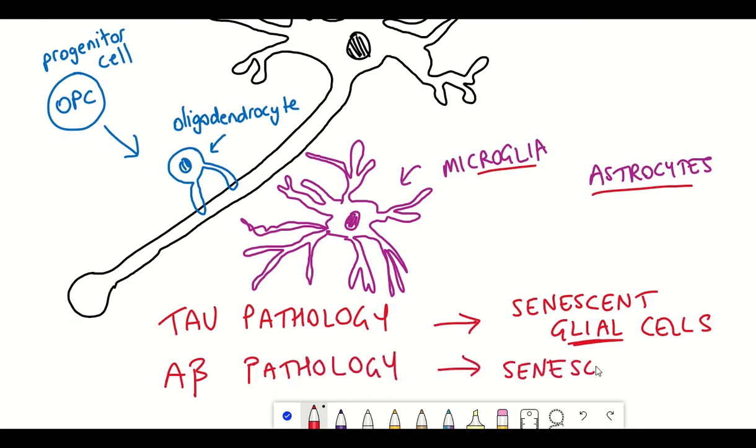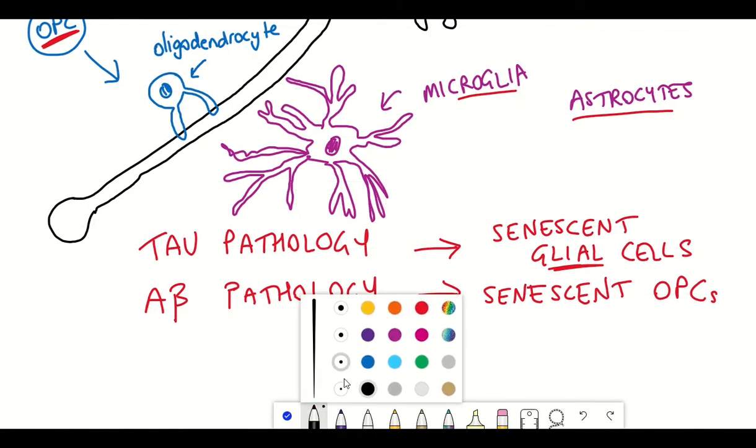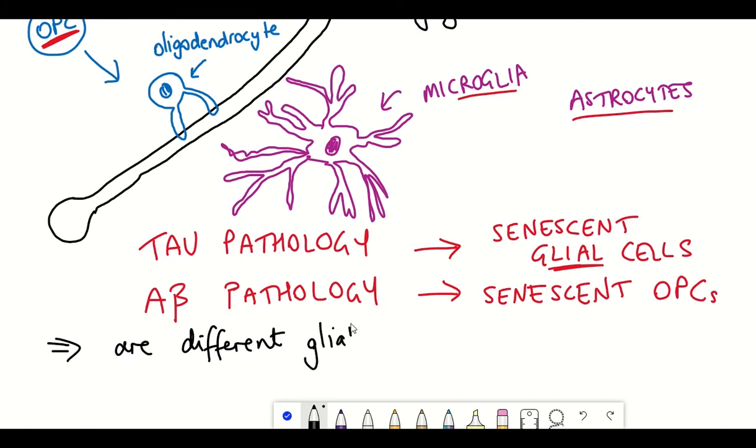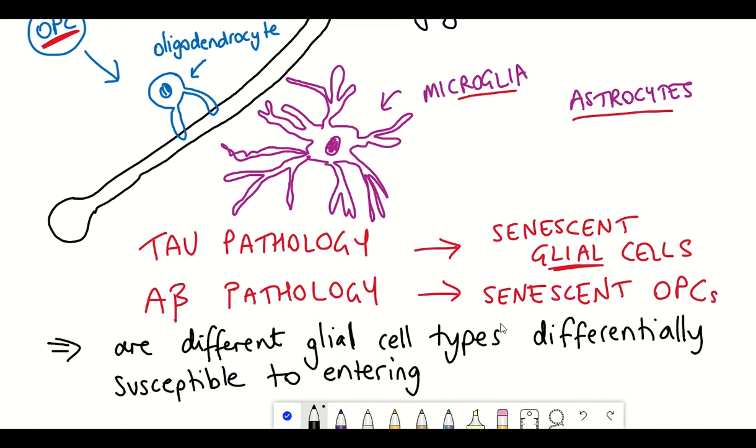Amyloid beta plaques have been associated with senescent OPC cells. That's interesting because it suggests that maybe different glial cell types are differentially susceptible to entering a senescent state.